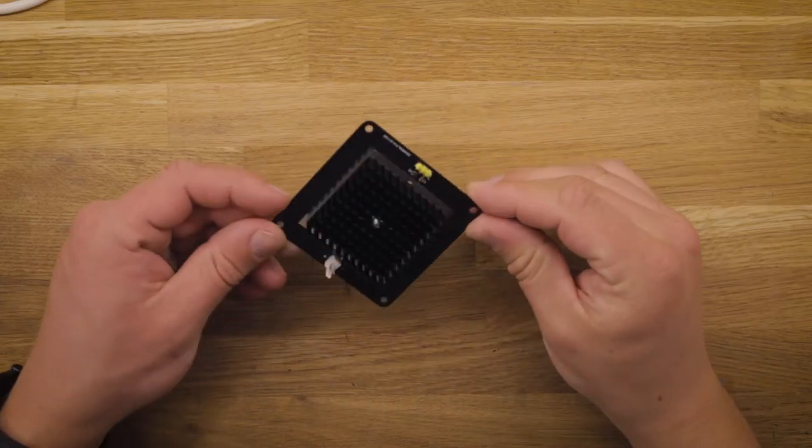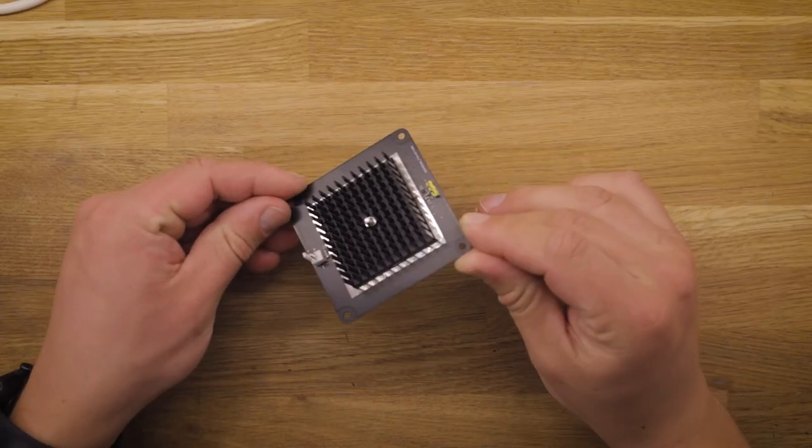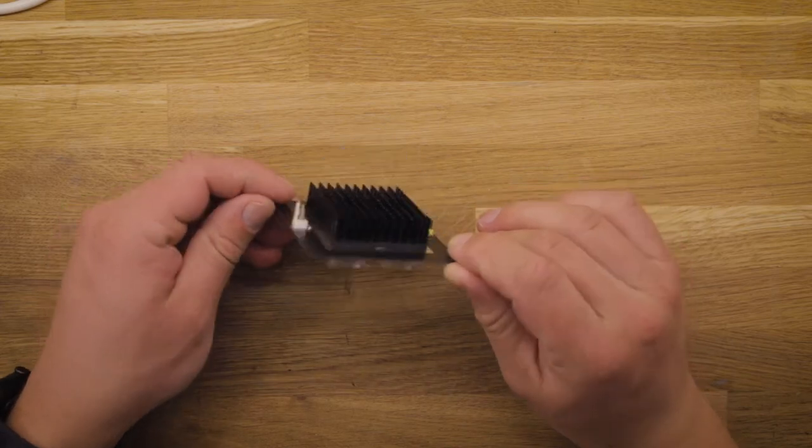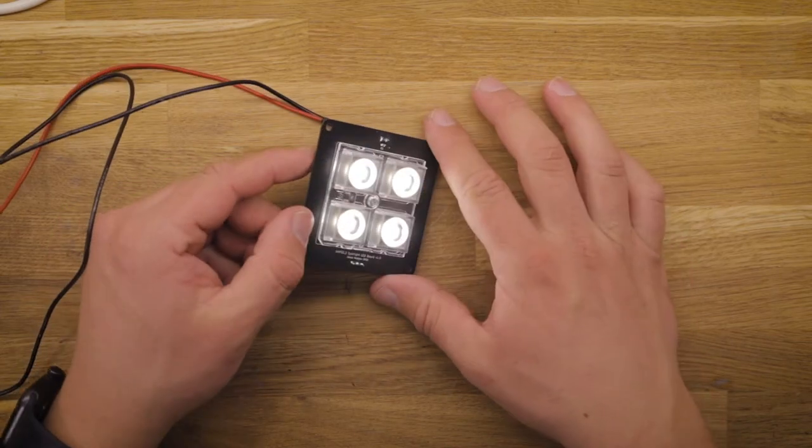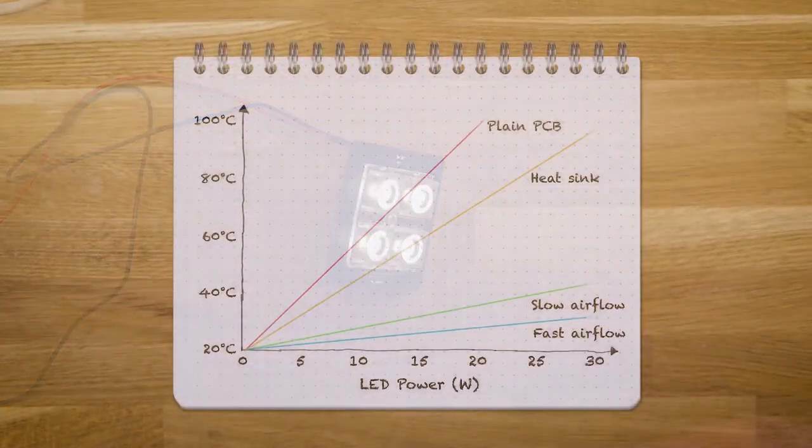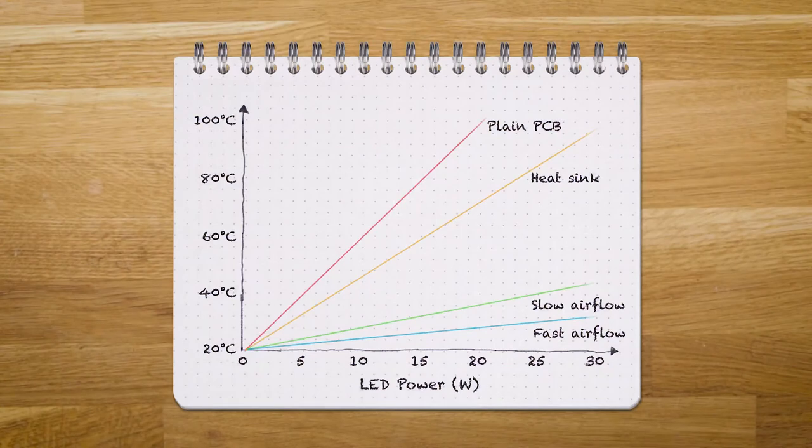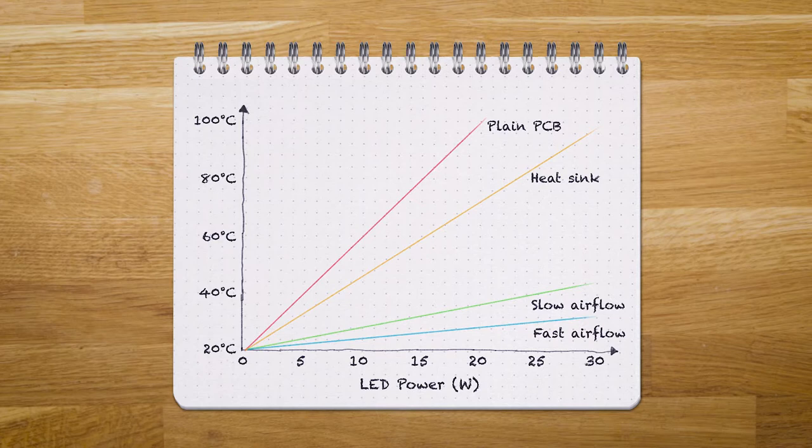Two videos ago in part 1 of my DMX LED light series, the LED board was assembled and its thermal performance was evaluated. The graph shows how the temperature of the PCB easily exceeded 70 degrees celsius when running at only 20 watts without any active fan cooling.